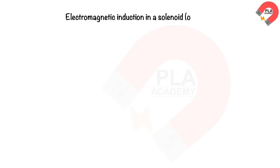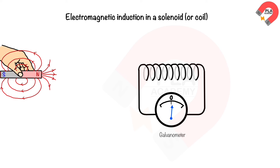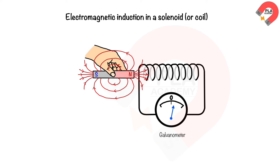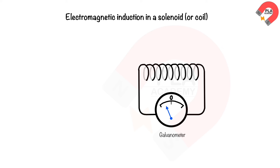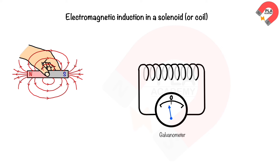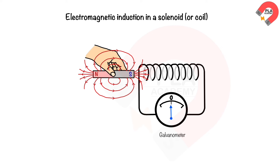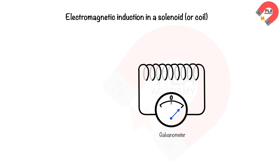Electromagnetic induction in a solenoid: when the north pole of a magnet moves into the solenoid and stops, the galvanometer needle deflects to the right then returns to zero, generating an induced current and EMF. When the north pole moves away at the same speed, the needle deflects to the left. When the south pole moves into the solenoid, the needle deflects to the left. When the south pole moves away at a greater speed, the needle deflects to the right with a greater deflection — showing that induced current increases as the magnet moves faster.